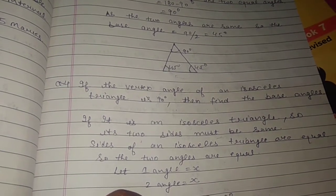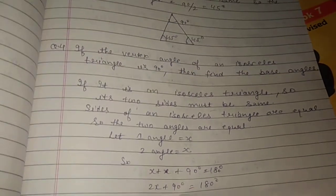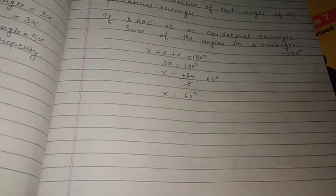Let one angle equal to x, so the second angle is also x. So, x plus x plus 90 equals 180, so 2x plus 90 equals 180.